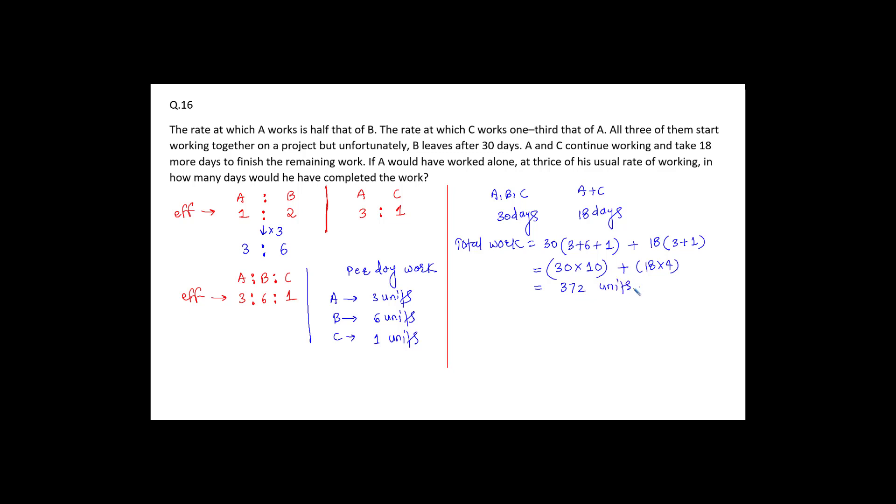Now after that, the question says that if A would have worked alone at thrice of his usual rate of work. So now look here, A is going to work with the thrice of his efficiency. So now per day work of A becomes how much? Per day work of A is equal to 3 into 3, 9 units.